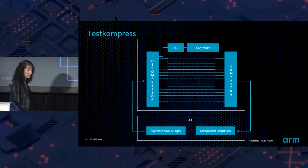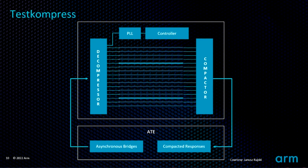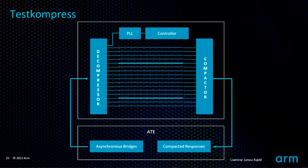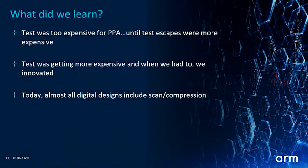Around 2003, Mentor Graphics invented something called Test Compress, which is pretty cool. It allows you to have just a few scan-ins, decompresses them into many internal scan chains so your chains got much shorter, then compresses back to a few scan-outs to the tester. This took a little longer for computation, but it didn't matter because scan chains were so much shorter. I believe this was pivotal in that test did not ever become more expensive than silicon. Today, almost all digital designs contain scan and compression.